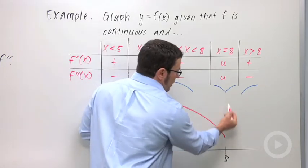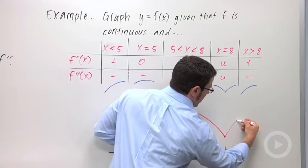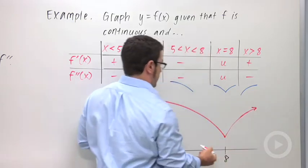So something like that. And then at x equals 8, we've got our little corner or cusp. And then it's going to increase and be concave down afterwards. Something like that.